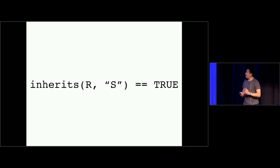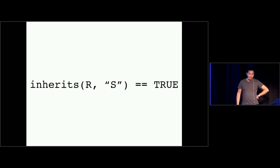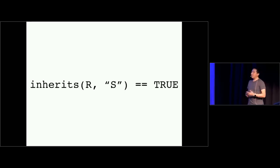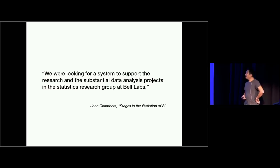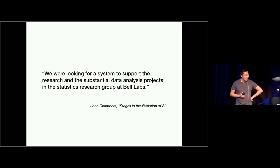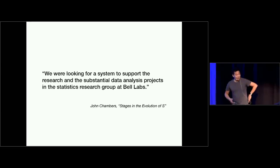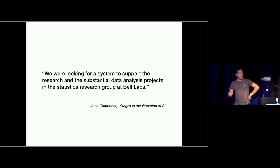Any talk about R over the last 20 years would be a little remiss if it didn't talk about the origins in S. Unfortunately, a lot of documents written about S in the early days at Bell Labs are not really available on the web anymore — you kind of have to go on the Internet Archive. John Chambers wrote in 'Stages in the Evolution of S' about the audience they were thinking about when they developed S. He said they were looking for a system to support the research and data analysis projects in the statistics research group at Bell Labs. If you weren't a member of that group in roughly 1976, the S system wasn't designed for you.